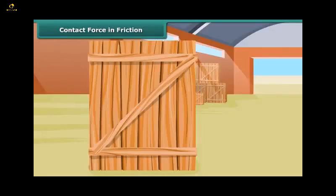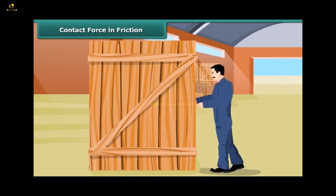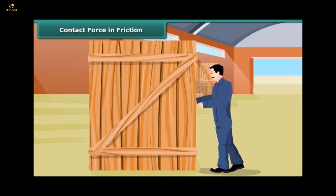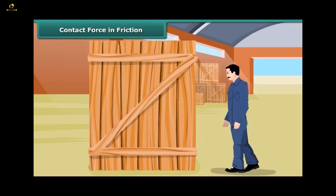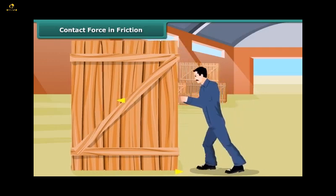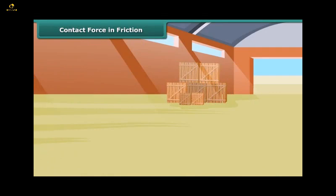Friction depends on the amount of contact force pushing the two surfaces together. Here, a man is trying to push a heavy box, but the box is not moving. When the box is pushed, the bottom of the box and the floor rub one another and friction comes into play, which resists the motion. The force from friction is more than the push force being exerted by the man. The box will move only when a greater force than the force from friction is applied. Once the box starts sliding, you may find it easier to move the box already in motion. This example proves that friction depends on the amount of contact force pushing the two surfaces together.